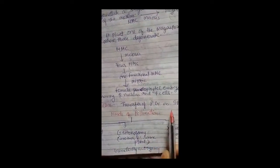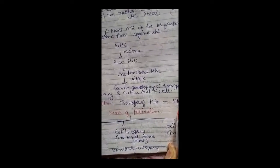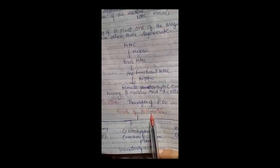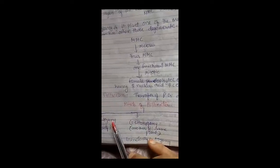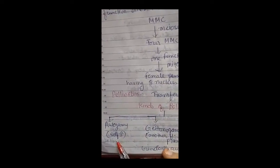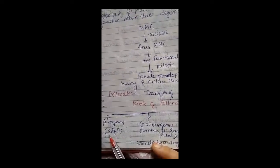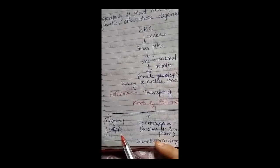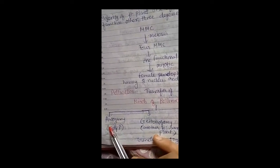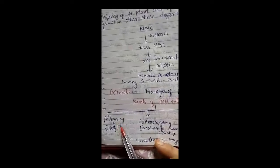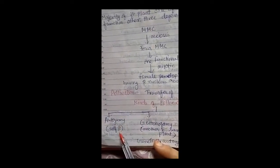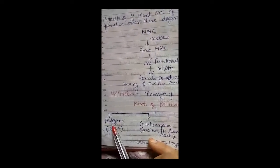Pollination is the transfer of pollen grains from the anther to the stigma. There are different kinds of pollination. In 10th class, you studied self-pollination and cross-pollination. Here we use different terms: autogamy, geitonogamy, and xenogamy. Autogamy is actually self-pollination, in which the pollen grain of the same flower lands on the stigma of the same flower. No agent is required to transfer the pollen grain. This type is known as self-pollination or autogamy.